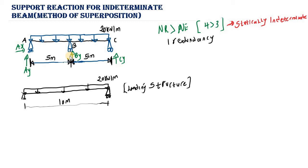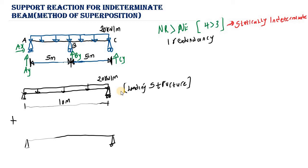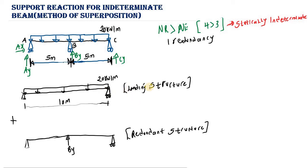We add the loading structure to the redundant structure. The redundant structure has the pin support at point A, the roller support at point C, and at point B we apply the redundant reaction By acting upward. If we add the loading structure to the redundant structure, we still arrive at the original beam — this is the principle of superposition.